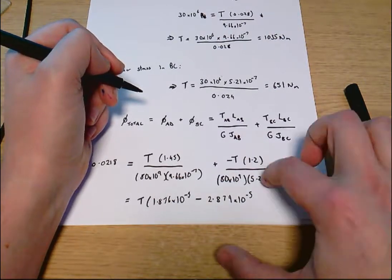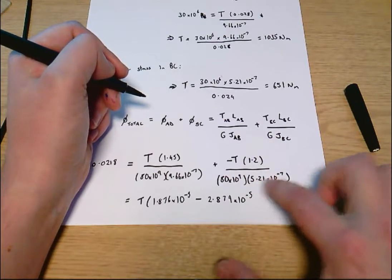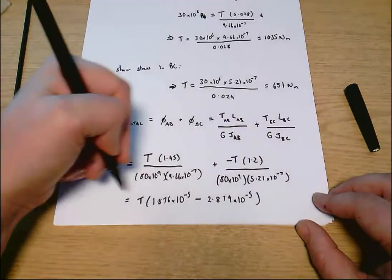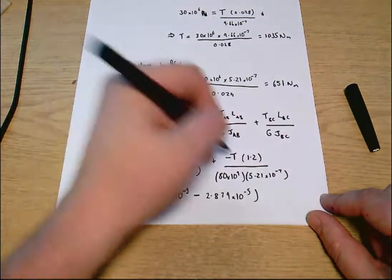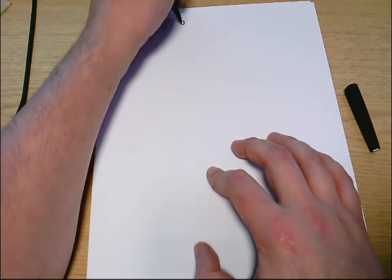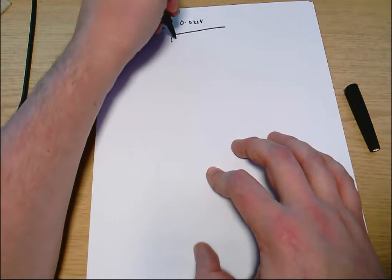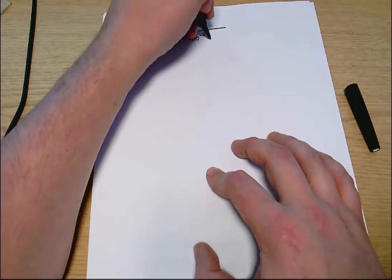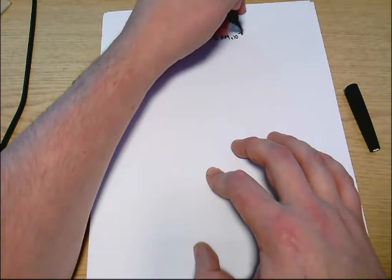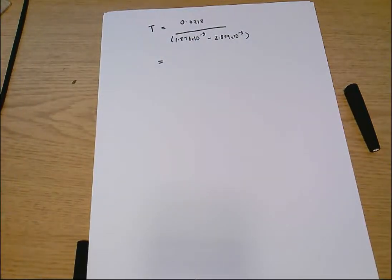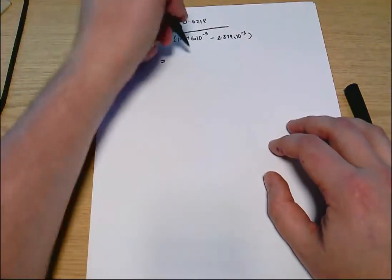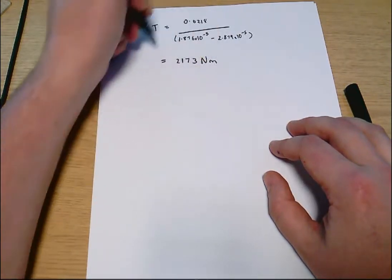That makes sense, this term should be a slightly larger number, because we've got a slightly smaller number on the bottom line. T will come out negative here, it doesn't, it just means I picked the wrong choice of which one to make negative, it's the magnitude of T that we're really interested in. Rewriting all of that, I get T equals 0.0218 divided by 1.876 times 10 to the minus 5, minus 2.879 times 10 to the minus 5, and that equals, it's coming out as a negative number, but that number is 2173 newton meters, the magnitude of that torque.